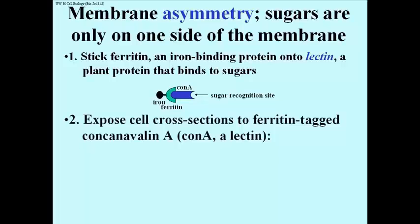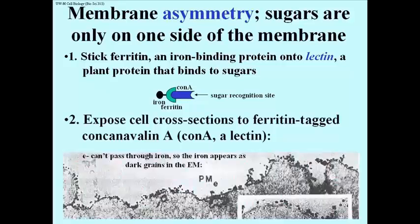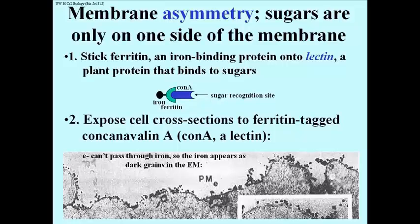So we take a tube full of this stuff and we bathe cross-sections of cells in this ferritin-tagged con-A in the electron microscope. Here's a cross-section of a cell, first in low power and then in a smaller inset in high power. The electrons beaming in an electron microscope cannot pass through iron, so we say that iron is electron dense. In an electron micrograph, bits of real iron are going to appear as little black dots.